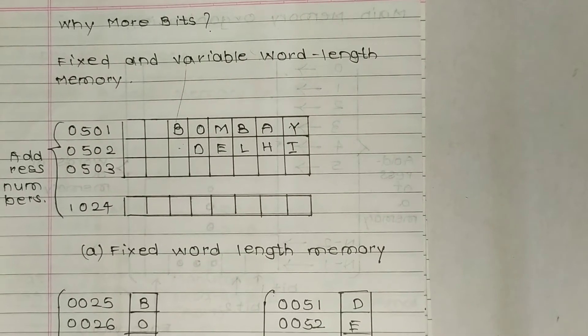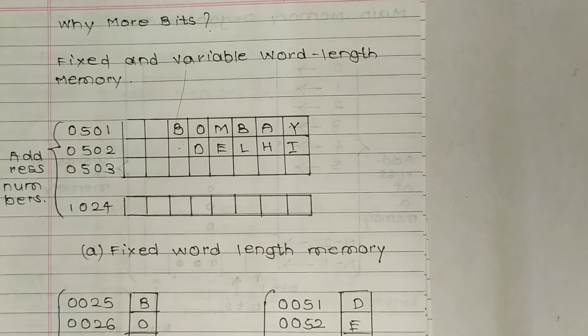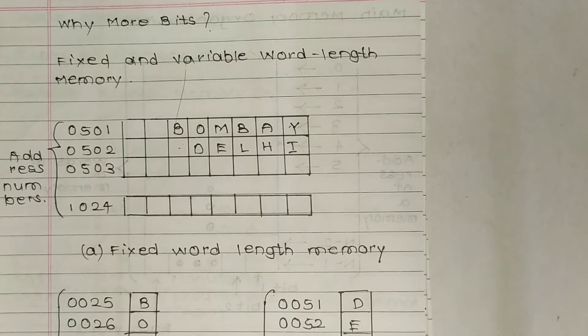Fixed and variable word length memory. Main memory of some computers can store a fixed number of characters equal to its word length in bytes in each numbered address location. Such computers are said to be word addressable and they employ fixed word length memory approach.